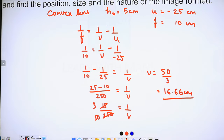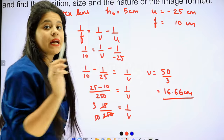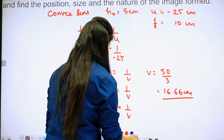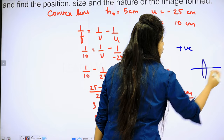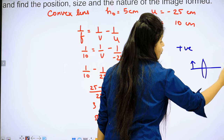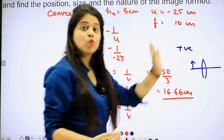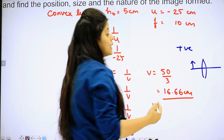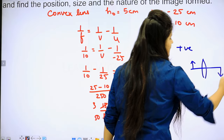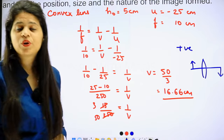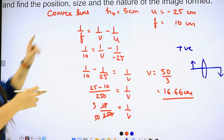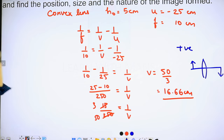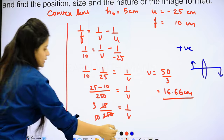Our image distance is positive. If the image distance is positive, it means the image is formed on the right side of the lens. This tells us the image is real and inverted. So a real and inverted image is formed. Now we know the nature; we still need to find the size and position, which we will find using magnification.